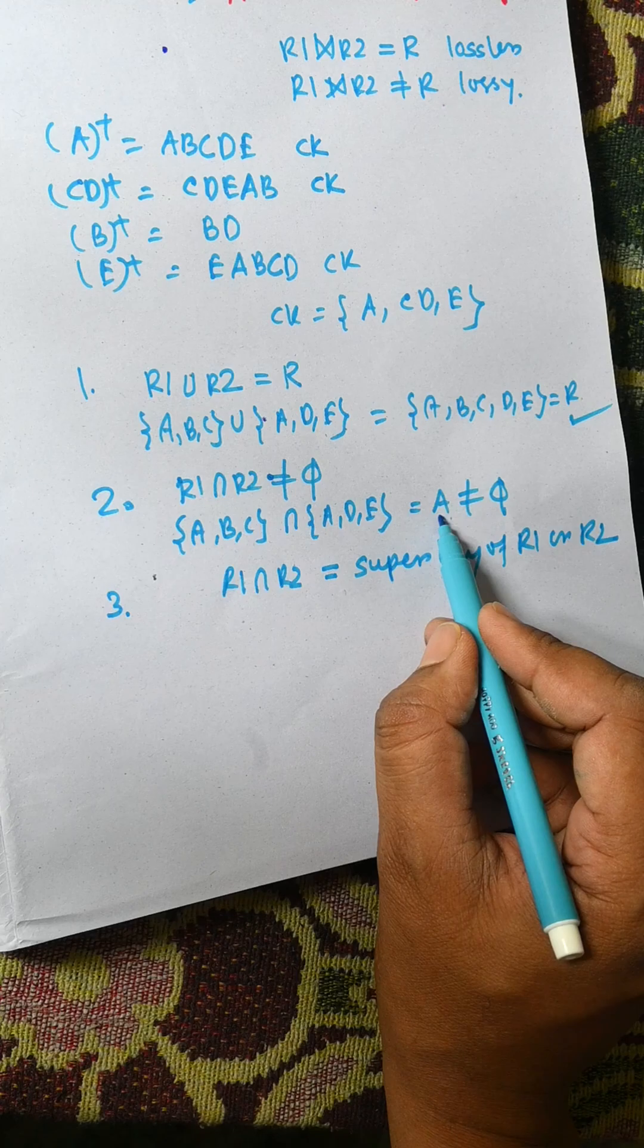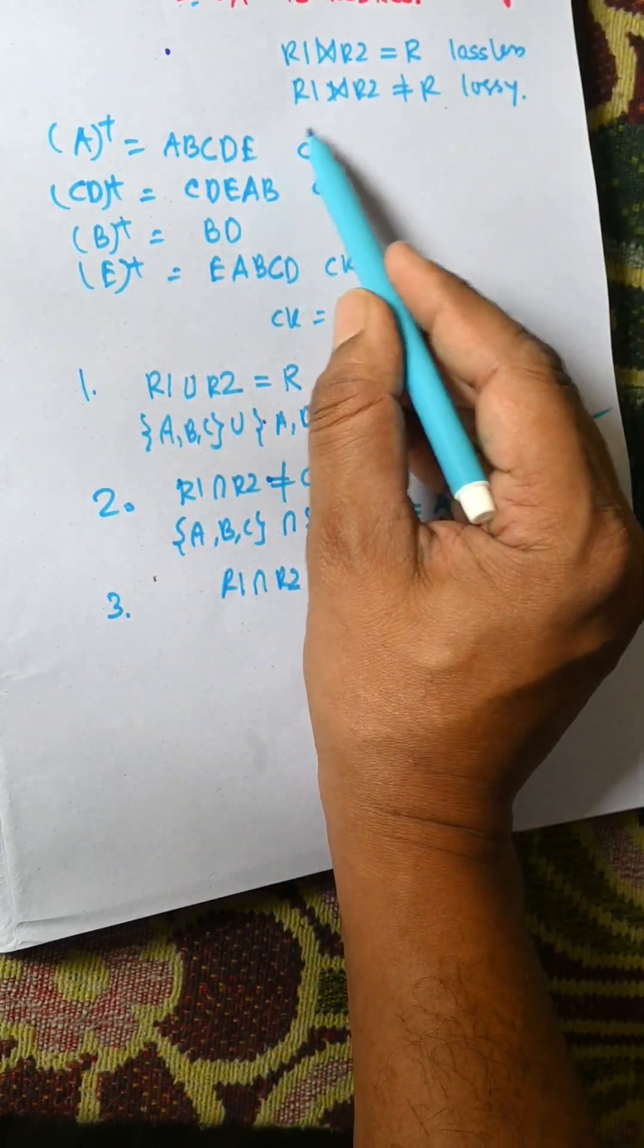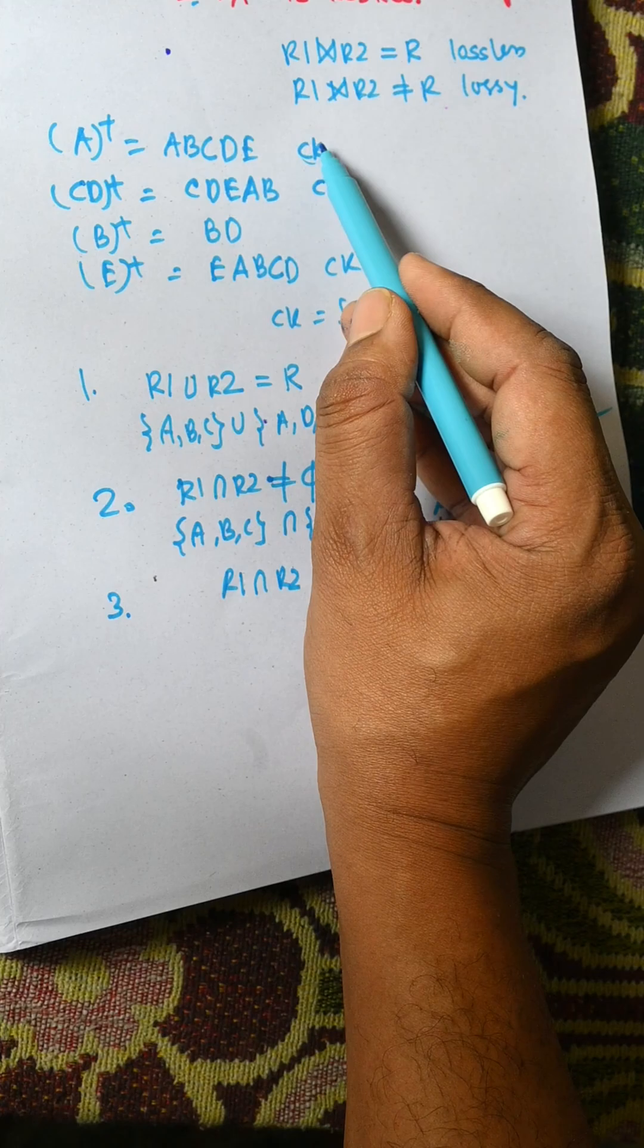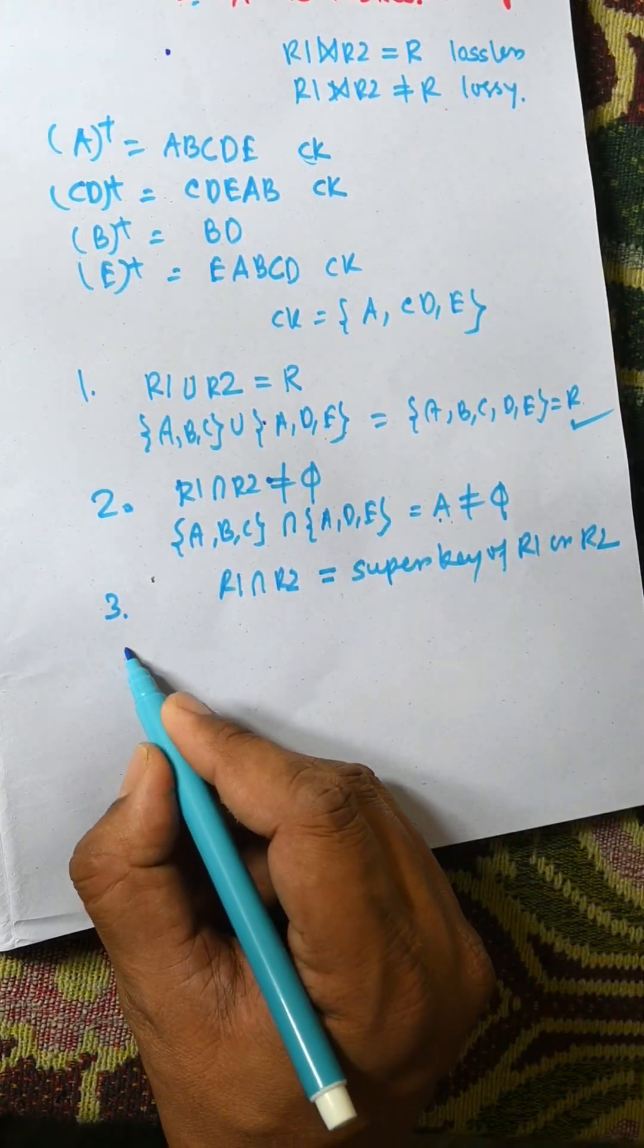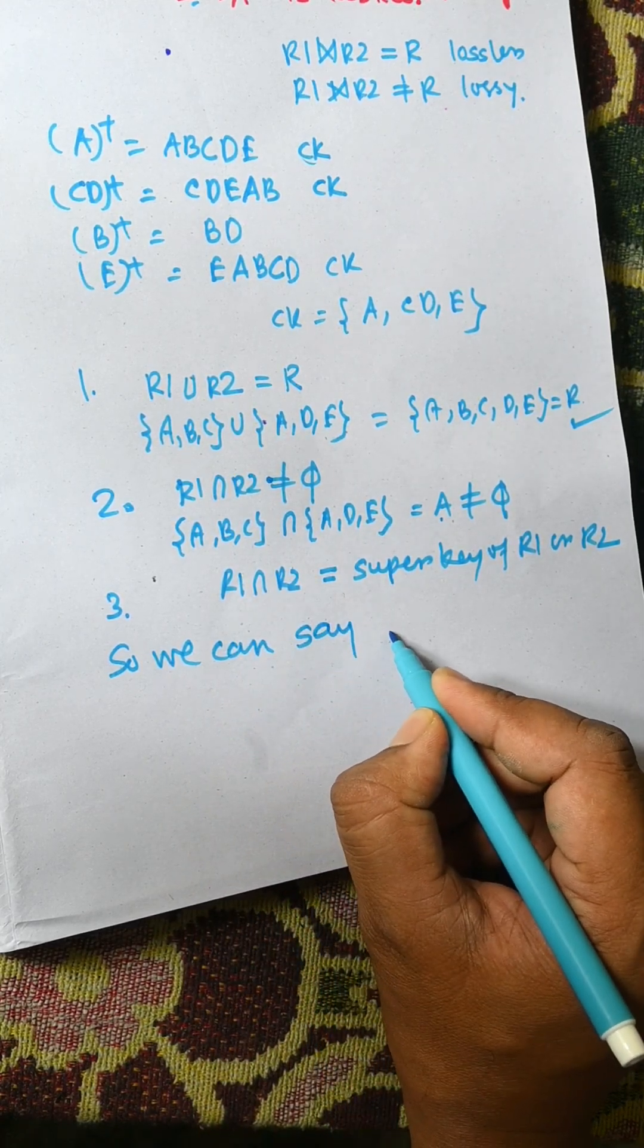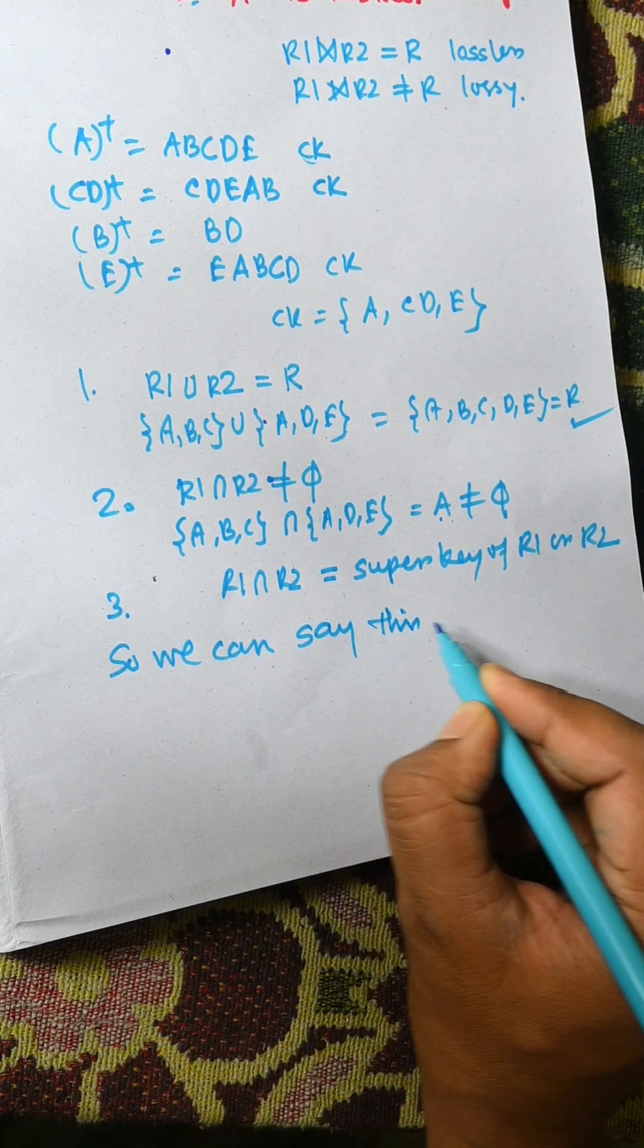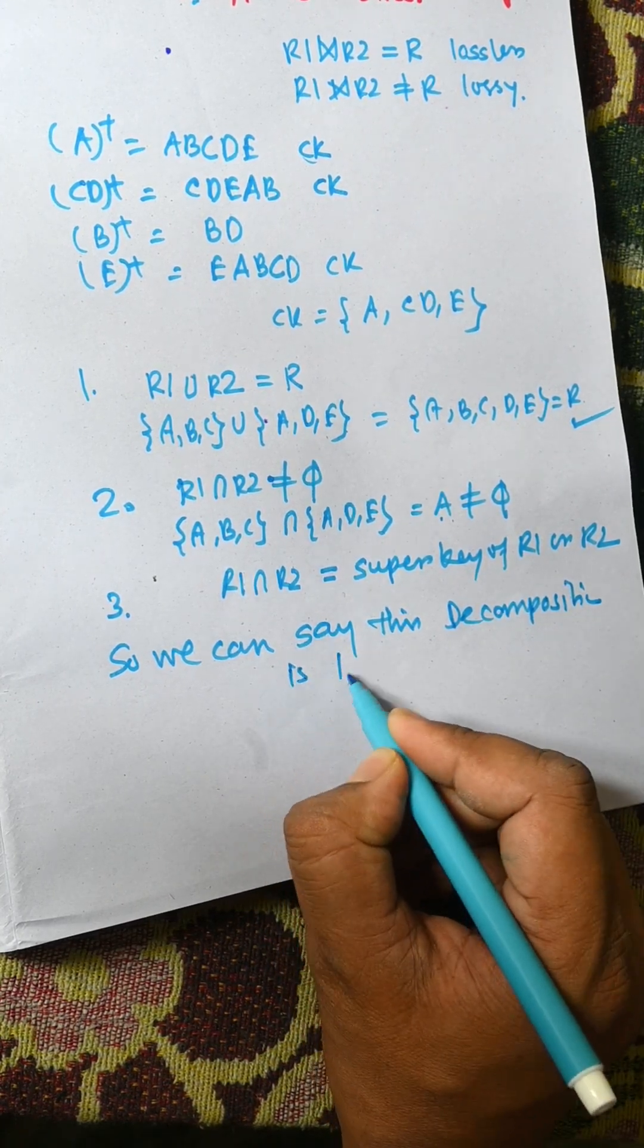Here A is a super key that is a super key of R1. As it is a candidate key, and we know the candidate key is a subset of super key, so it is also true. So we can say this decomposition is lossless.